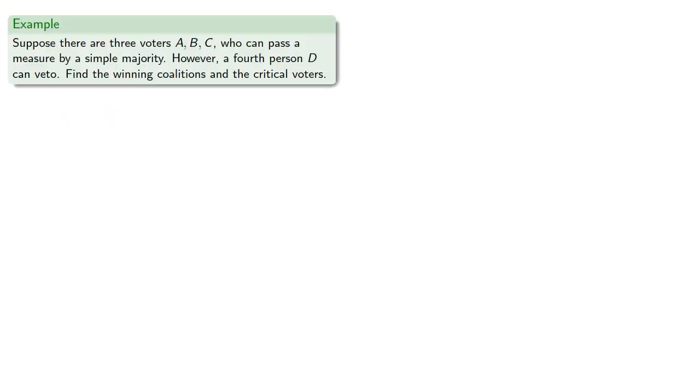Suppose there are three voters A, B, and C who can pass a measure by a simple majority. However, a fourth person D can veto.